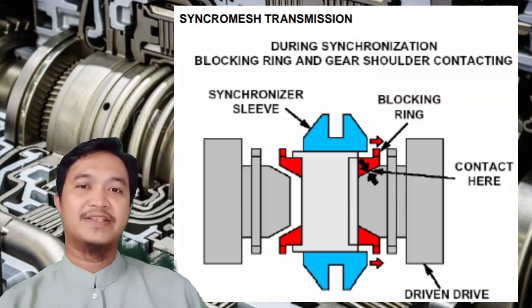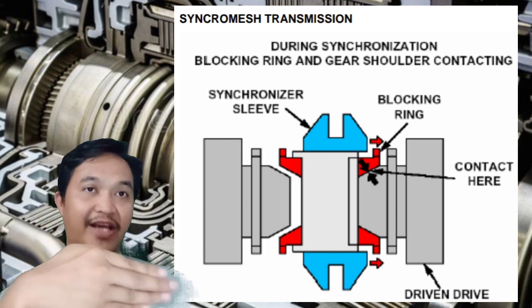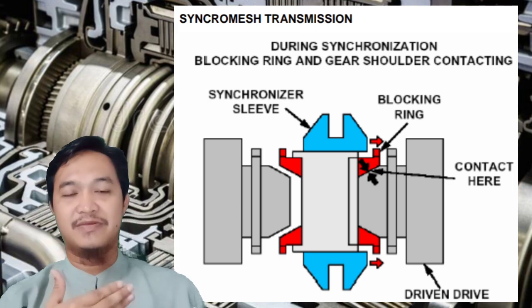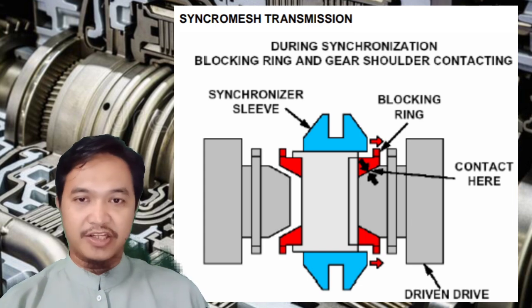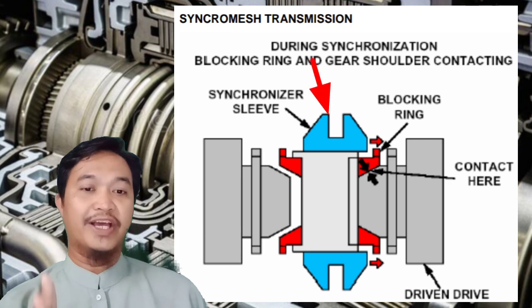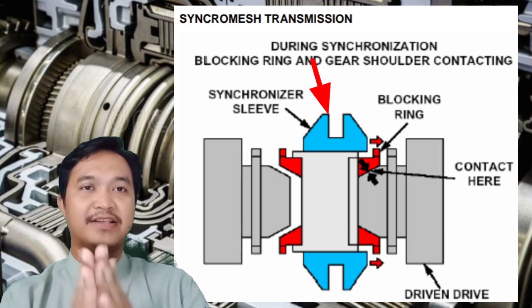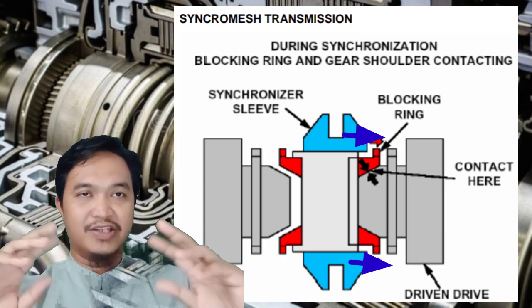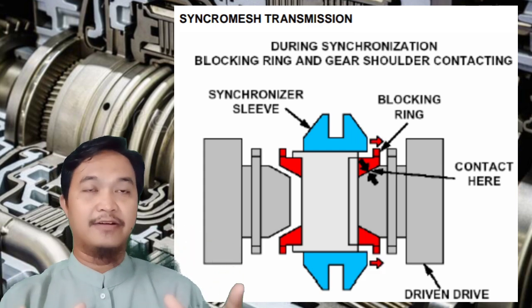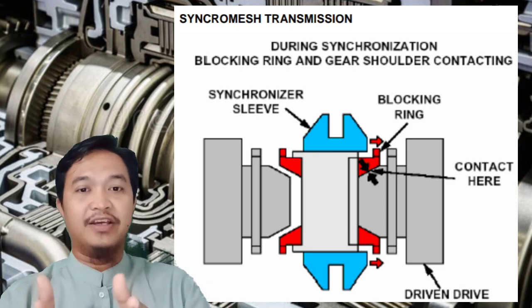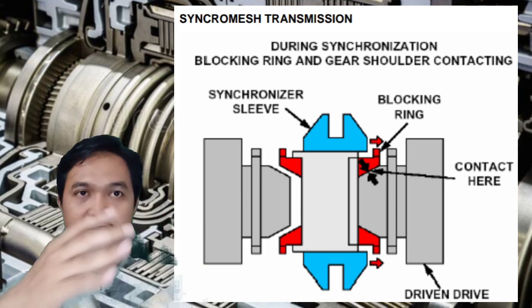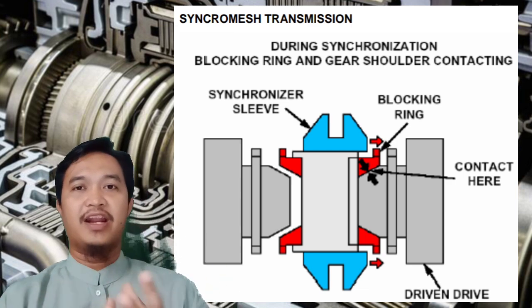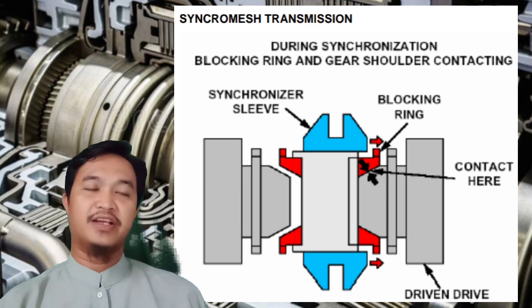Yang ketiga adalah synchronized transmission. Ini sangat populer di mobil-mobil ringan atau light vehicle, mobil pribadi kita biasanya menggunakan synchronized karena lebih halus. Ada mekanisme synchronizer sleeve dan juga blocking ring yang membuat pergeseran shifting transmisi menjadi lebih halus. Prinsipnya sama — ada dua shaft input dan output — hanya saja pergeseran shiftingnya menggunakan synchronizer sleeve sehingga menjadi lebih smooth.